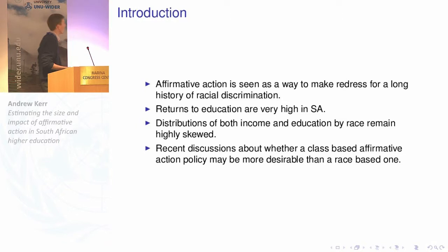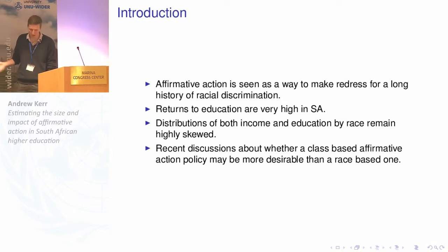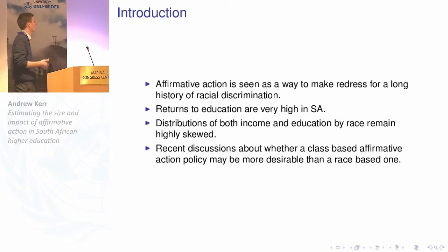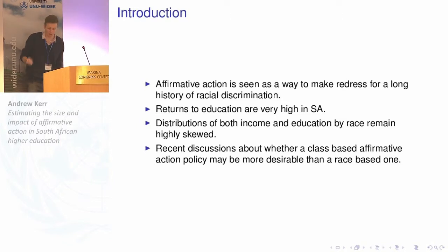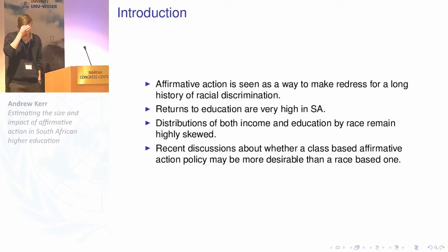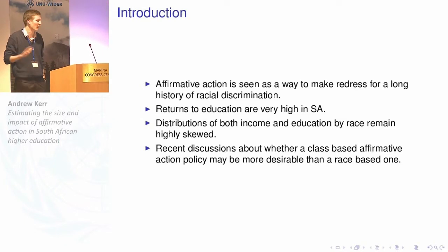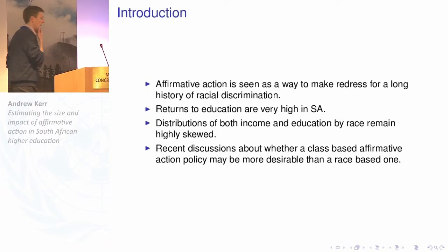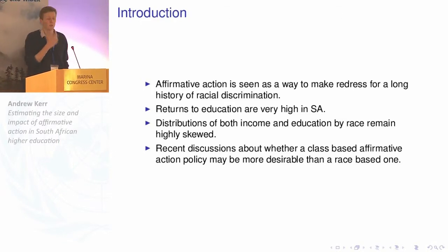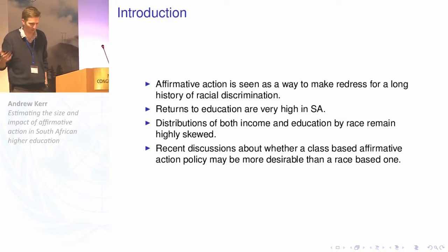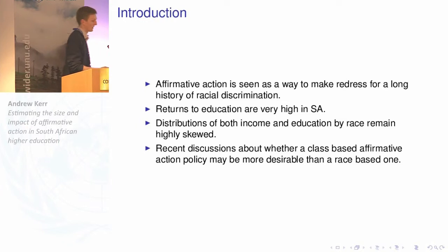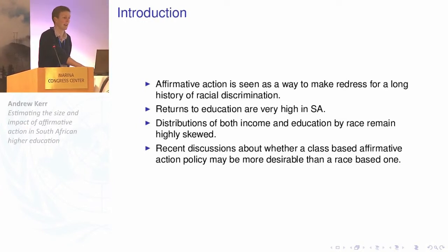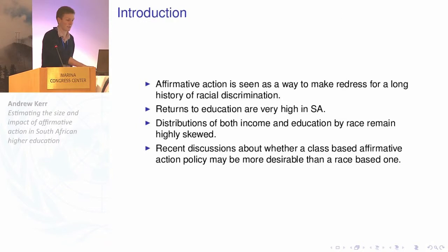There's been a recent discussion about whether we should have a class or socioeconomic status-based policy rather than a race-based policy, which is currently the case. For 2016, the university has moved to a policy that takes income into account in making decisions about who gets into university and who doesn't, rather than just race. But there hasn't been much research looking at the impacts that affirmative action is having on who gets in, how well targeted it is, and how beneficiaries and those displaced by affirmative action do.